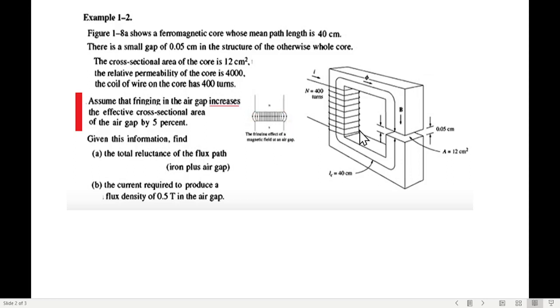So when the flux passes through here, it tends to go out. So it increases slightly and how much is that increase? That increase is 5% of the total area, 5% of this area.